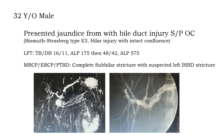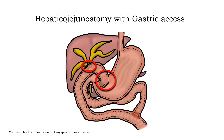Imaging showed complete supply duct obstruction with suspected left intrahepatic bile duct stricture. A particular test was performed. Later on, hepaticogastrostomy with balloon dilation and anastomosis construction was planned.